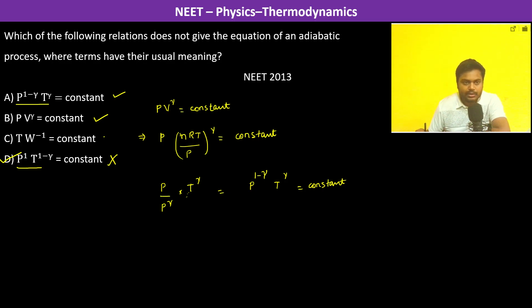This is one more option: T by W. What is T by W? Work done is basically P dV, so we'll refer to it as PV. So this is constant.